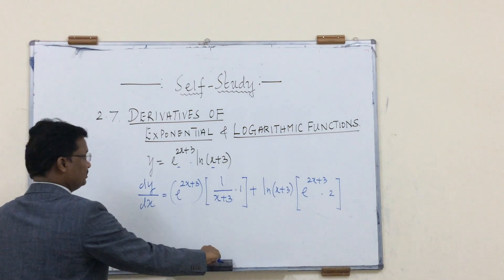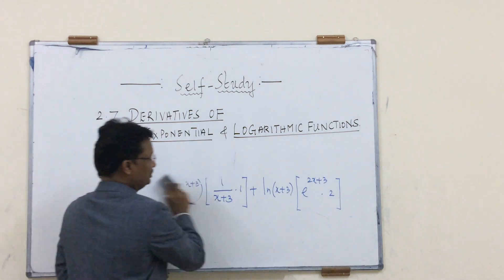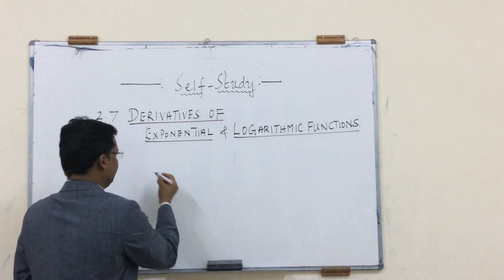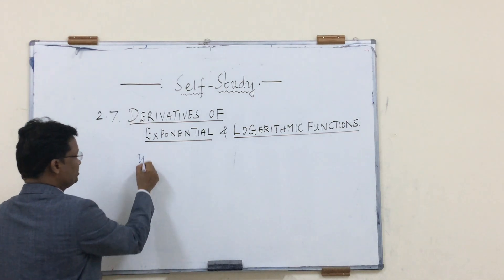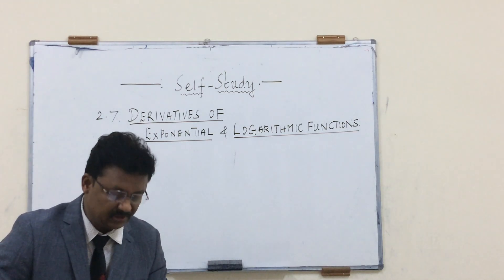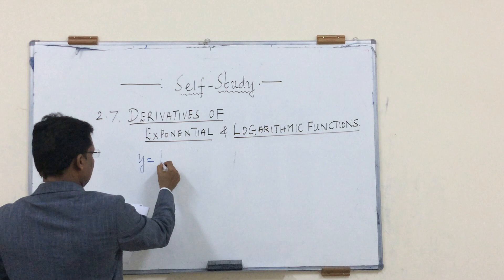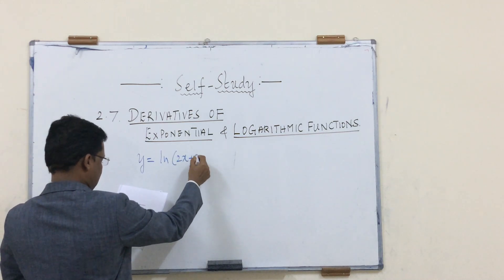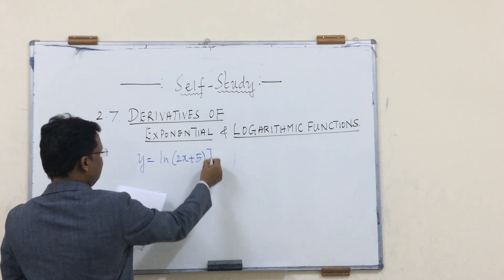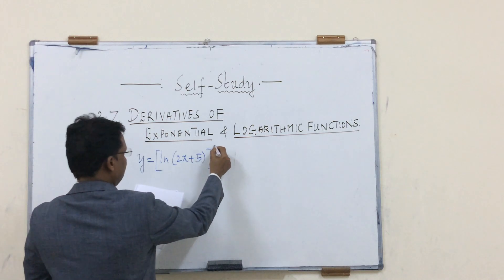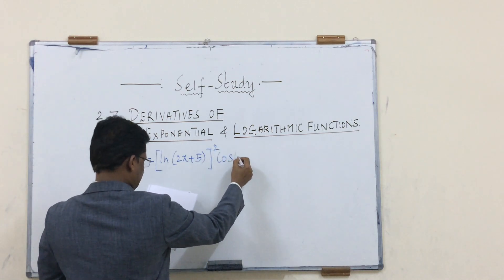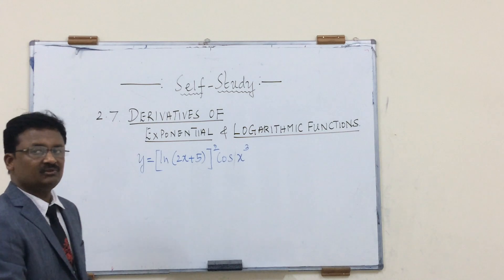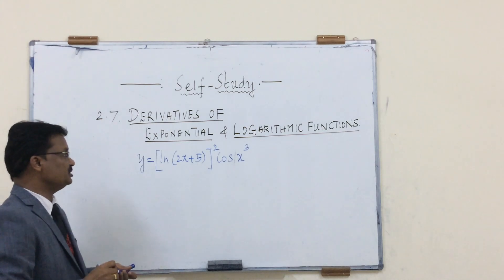Now one more good example of a combination of exponential and logarithmic functions: y = [ln(2x+5)]² · cos(x³). How to differentiate this form — one part is a logarithmic function and another is a trigonometric function, forming a product.